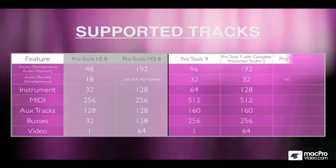Finally, the HD version of Pro Tools 9 increases over HD 8 the aux tracks, the buses — which are doubled — and the MIDI tracks, which are also doubled. So much higher track counts in Pro Tools 9.